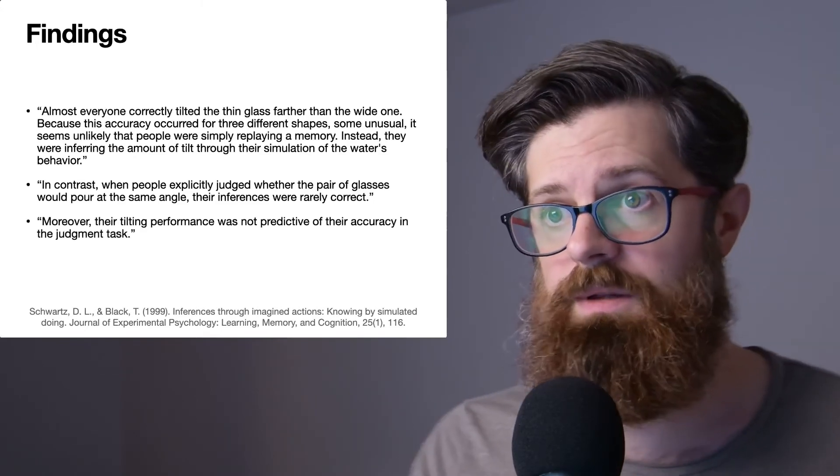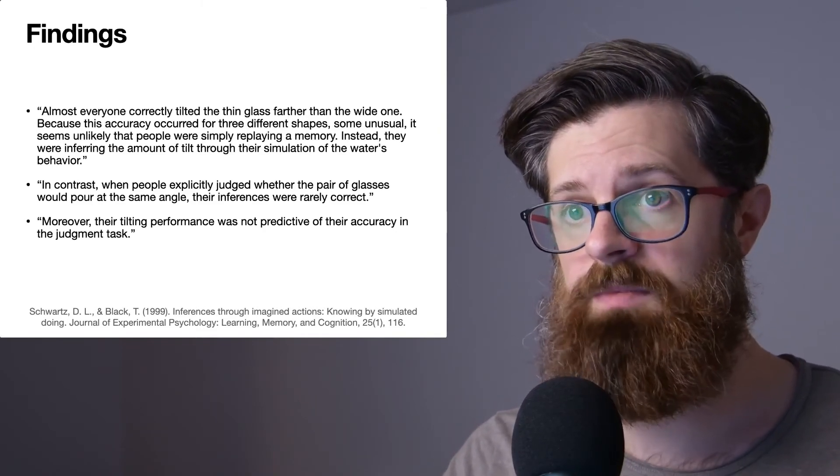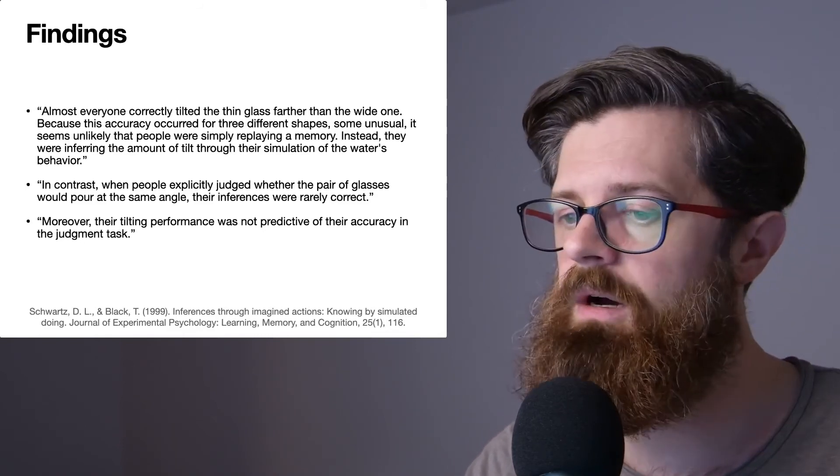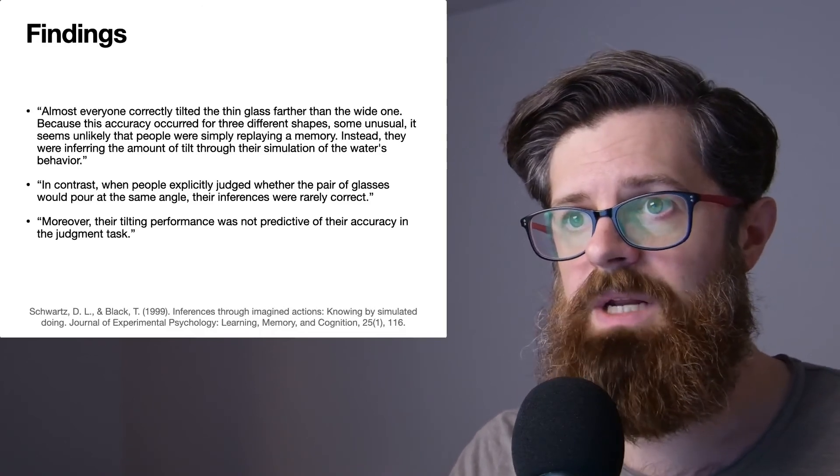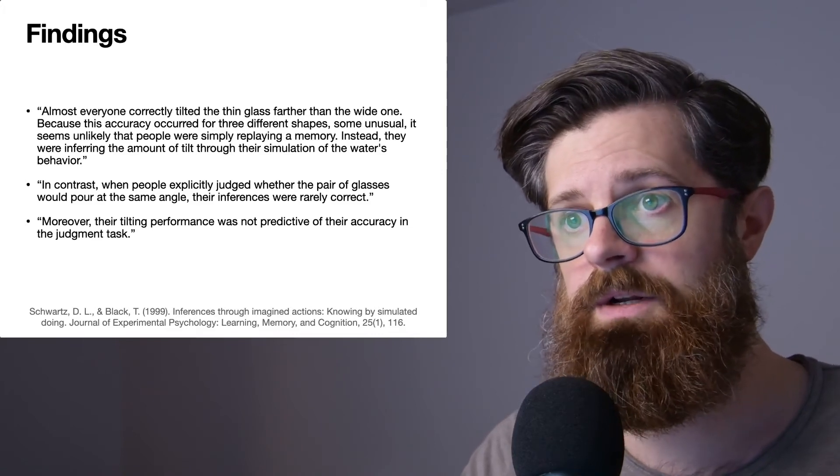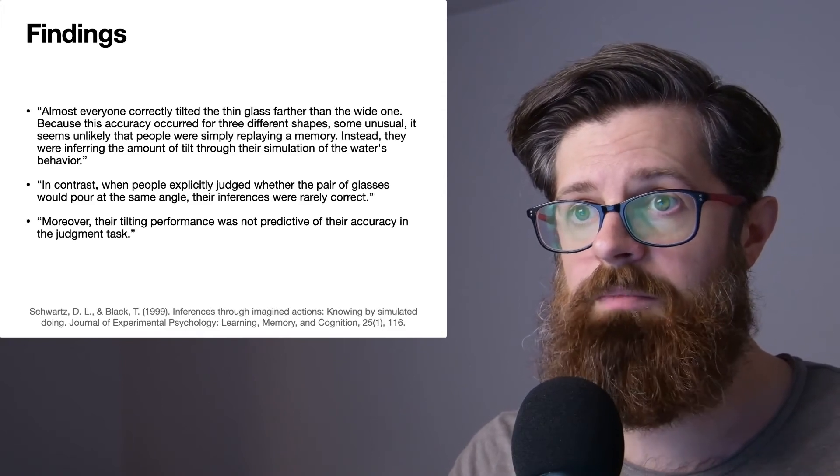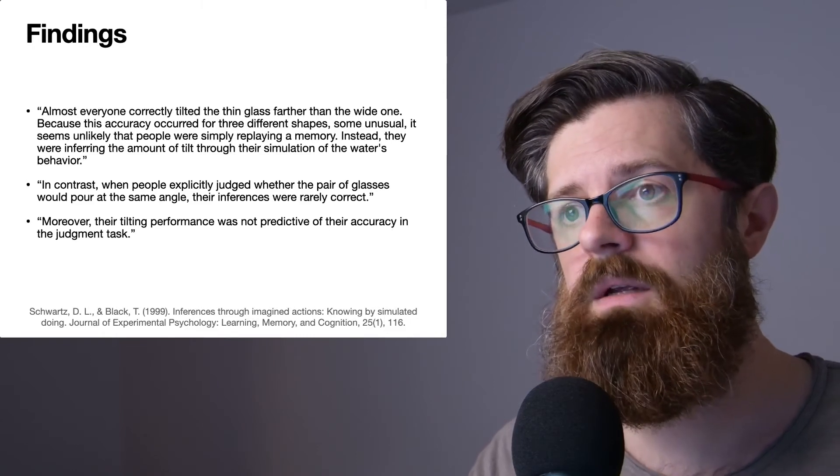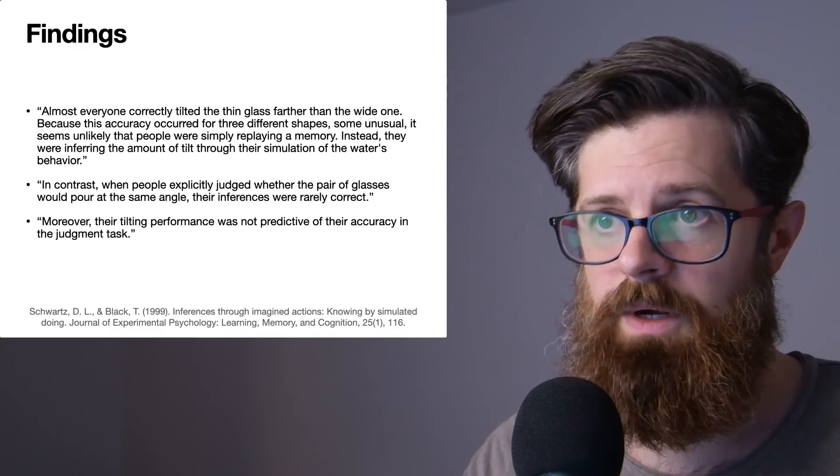Moreover, their tilting performance was not predictive of their accuracy in the judgment task. So that's interesting. It's not just that a given participant is better at the simulation activity than the describing the explicit judgment activity. More than that, it seems that performance in these two tasks are somewhat independent. So this is interesting evidence that there are different processes going on here.